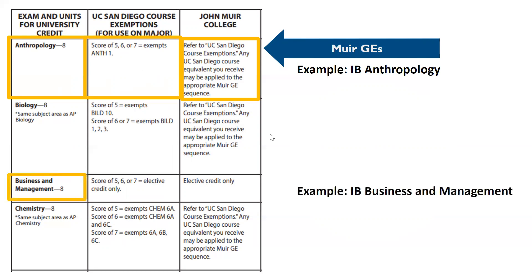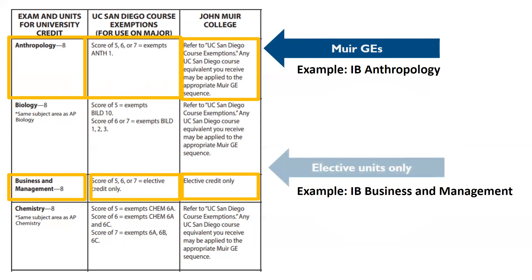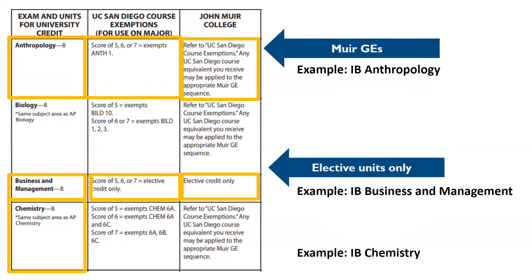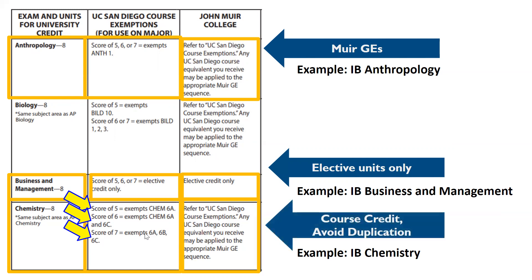For IB Chemistry: a score of 5 grants credit for Chemistry 6A only. A score of 6 grants you credit for Chemistry 6A and 6C only, which means that you can take Chemistry 6B at UCSD for credit. A score of 7 gives you credit for the full Chemistry 6 series — Chemistry 6A, 6B, and 6C. Avoid duplication of credit by checking this chart.